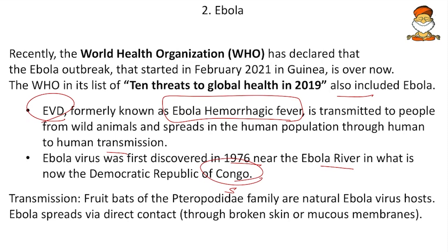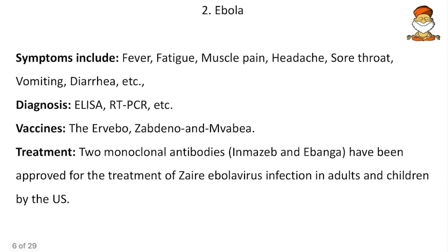Regarding transmission, fruit bats of the Pteropodidae family are natural Ebola virus hosts. Ebola spreads via direct contact through broken skin or mucous membranes. Most of these zoonotic viruses spread through contact with bodily fluids. Symptoms include fever, fatigue, muscle pain, etc.